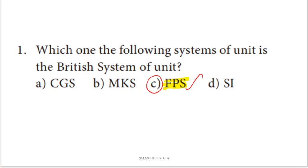FPS stands for F for feet, P for pound, S for second. That is, in this British system of units, length is measured in feet, mass in pounds, and time in seconds. So option C is the right answer.